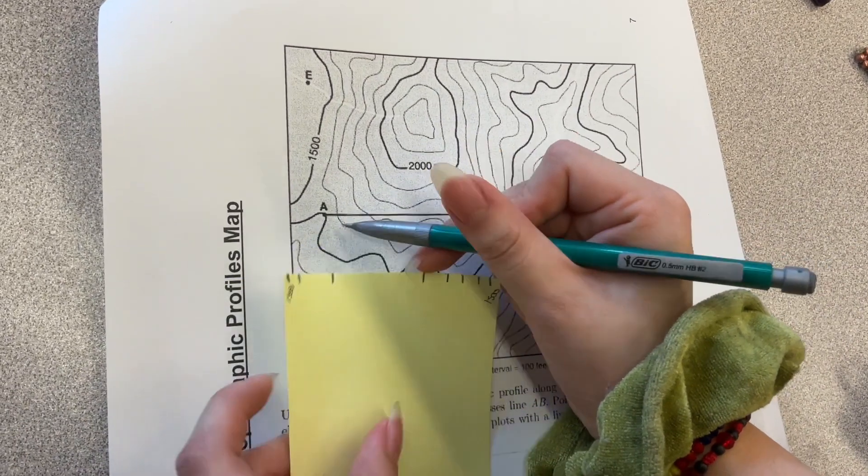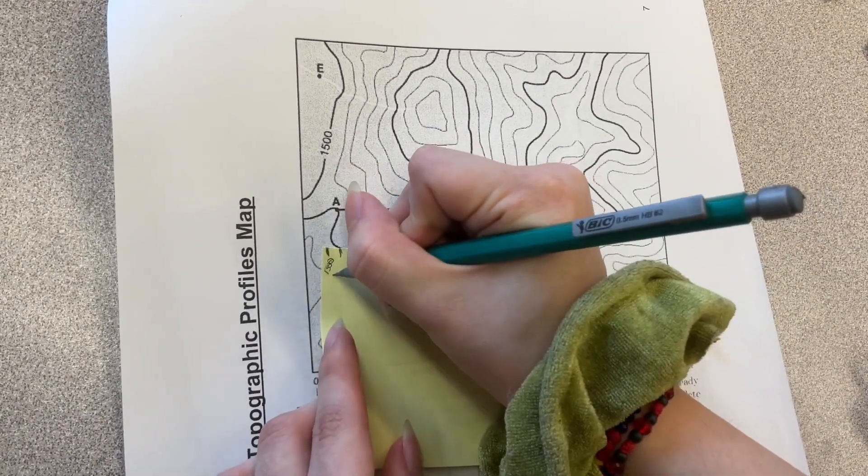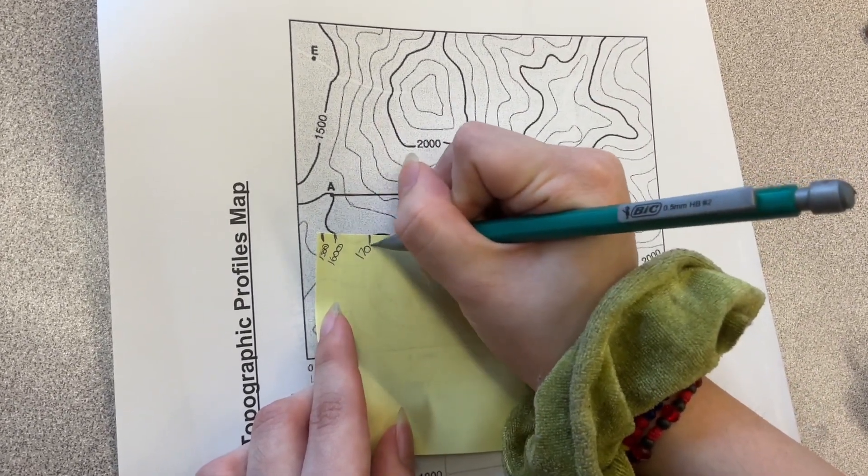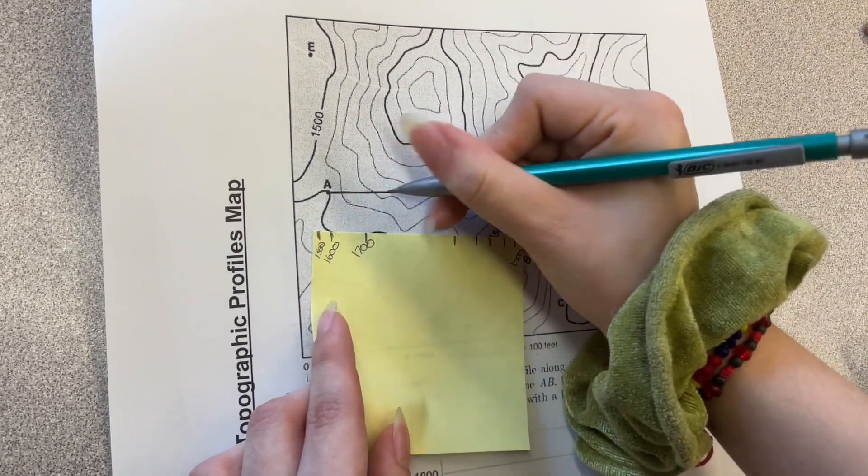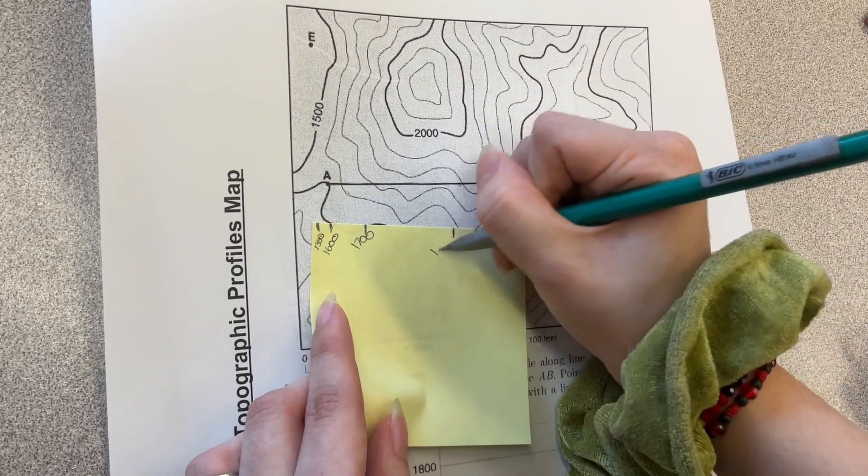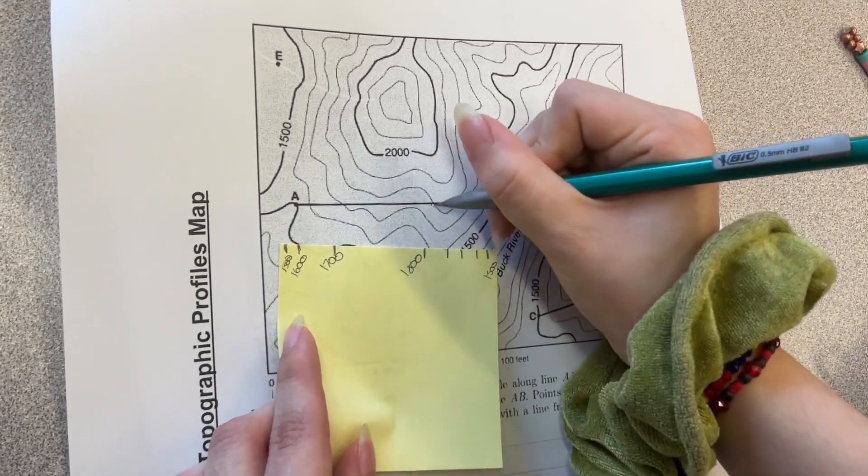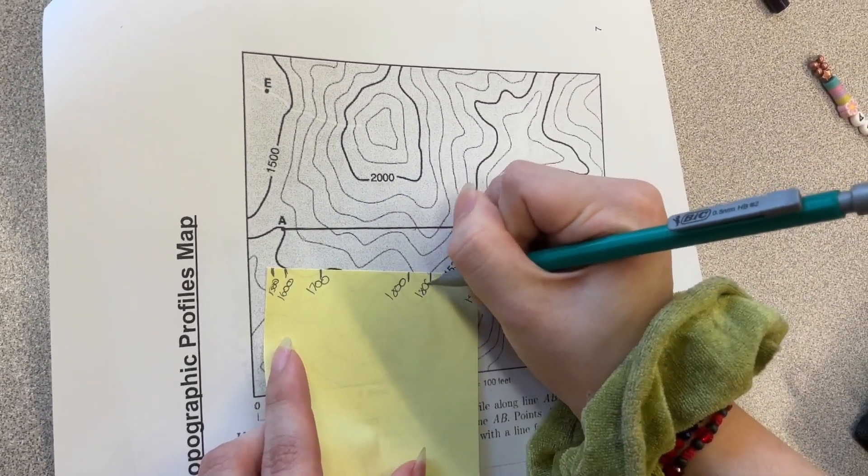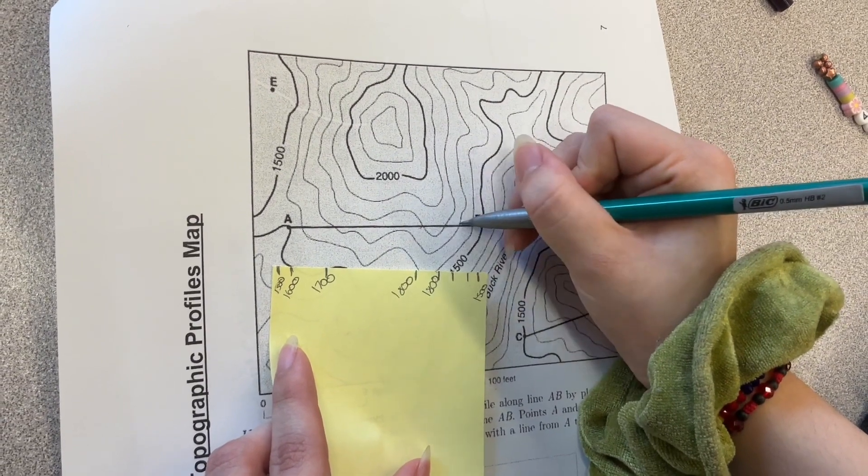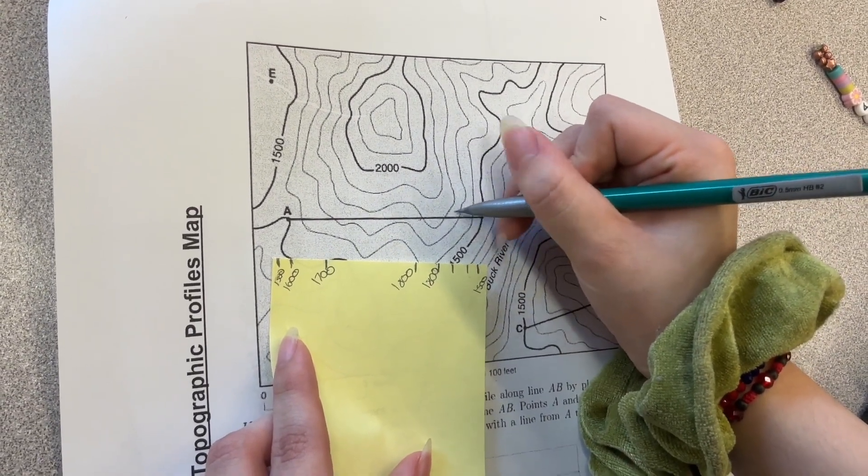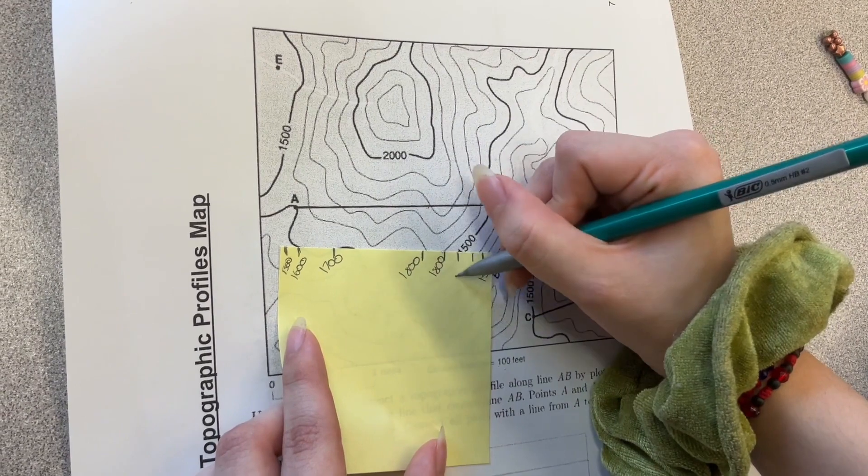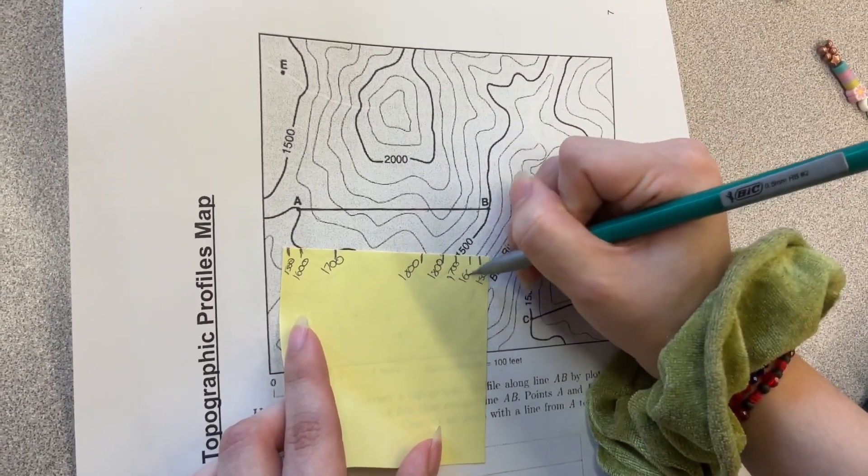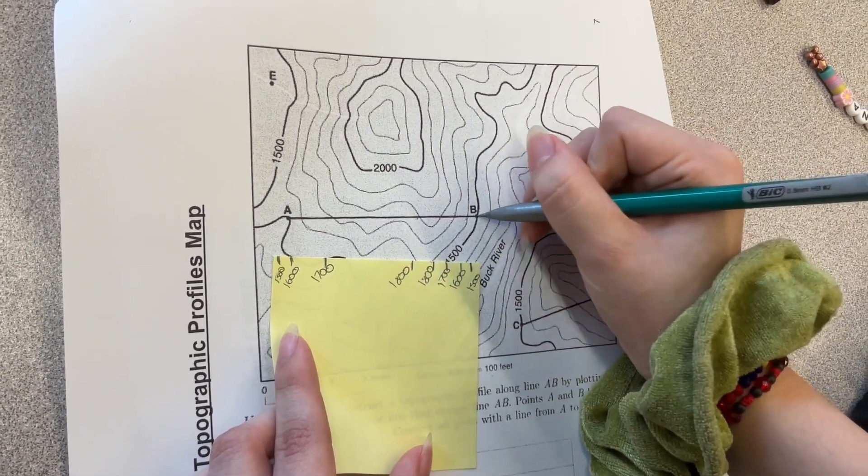So this one would be 1600. This one would be 1700. And then we move across, this one would be 1800. This one would also be 1800, it's still the same contour line. And this one would be going, this is now going down, back down again. So this is 1700. This is 1600, goes down. And so finally we get to 1500 again.